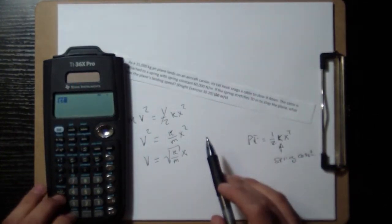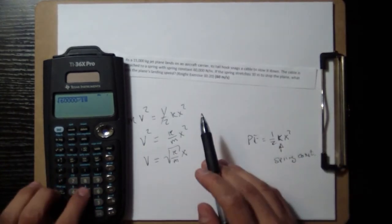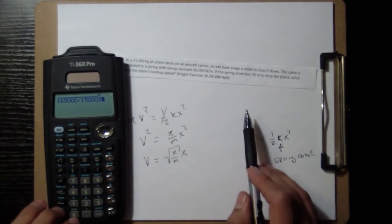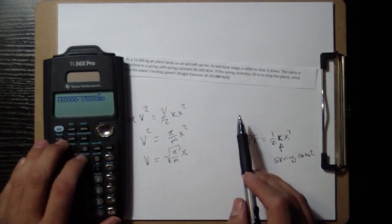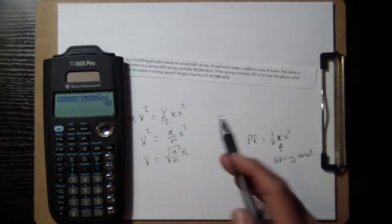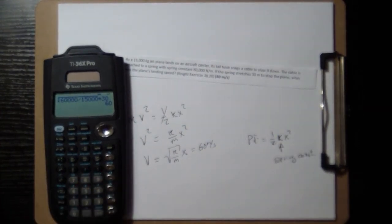Of k, which is 60,000, divided by 15,000, and outside the square root I multiply by 30, and I get 60, which is what we have here. Done.